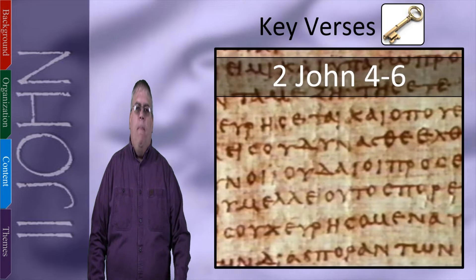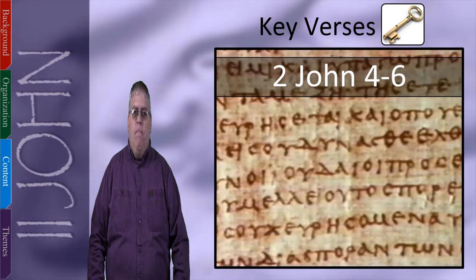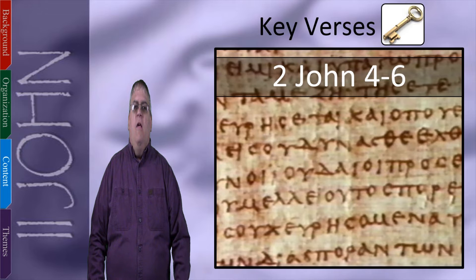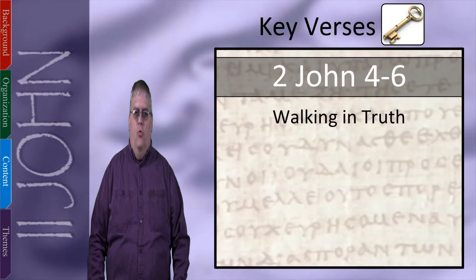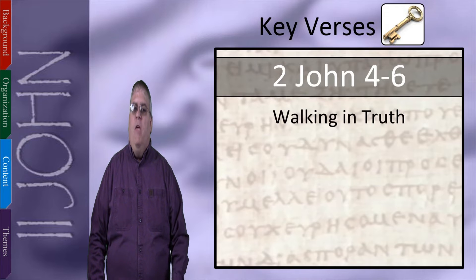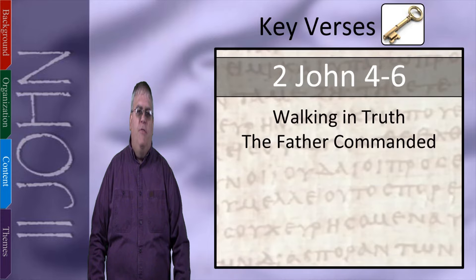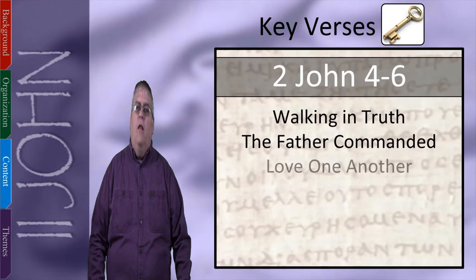Now let's look at the content of 2 John by examining some key verses. First is verses 4 through 6, which say: 'It has given me great joy to find some of your children walking in the truth, just as the Father commanded us. And now, dear lady, I am not writing you a new command, but one we have had from the beginning. I ask that we love one another. And this is love, that we walk in obedience to his commands. As you have heard from the beginning, his command is that you walk in love.' In this passage, John expressed his joy that his readers were walking in the truth. The word 'walk,' which John used, has the connotation of lifestyle, just like we saw in Paul and Peter. And this, he said, is what the Father commanded us. God has commanded that Christians have a lifestyle which conforms to the reality of who God is and what he's done. Then John reinforced this by reminding them of the command to love one another, which is the second part of the standard New Testament summary of how to walk in the truth — that is, love God with everything and love your neighbor as yourself.